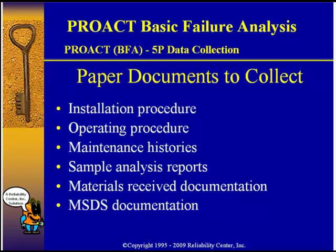For paper documentation, we should get installation procedures for the mechanical seals and possibly for the pumps. We certainly want to know what the operating procedure says we're supposed to be doing, as well as looking at maintenance histories going back about 72 hours to see if we've had any recent replacements of mechanical seals that might have been installed incorrectly. We should also look at sample analysis reports for the lubrication and treatment water we sent out, along with materials received documentation and MSDS — material safety data sheets.